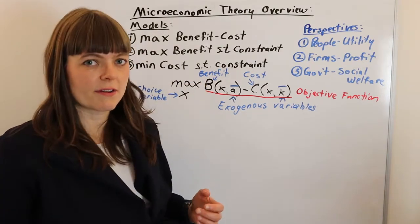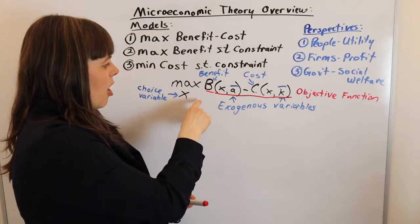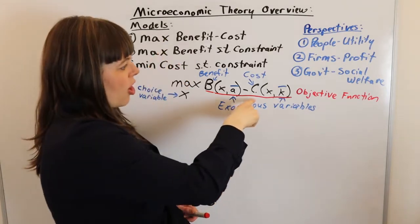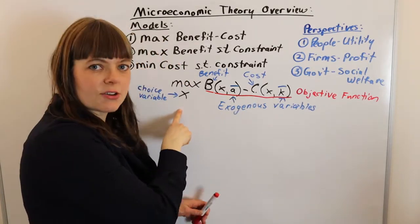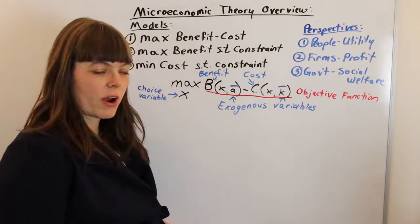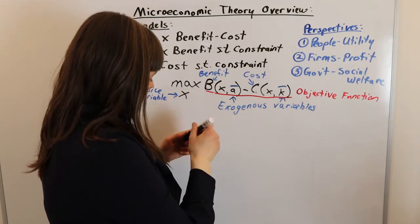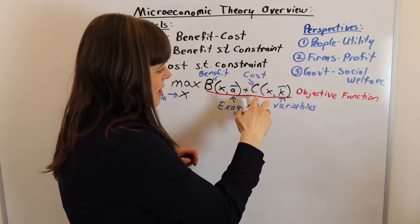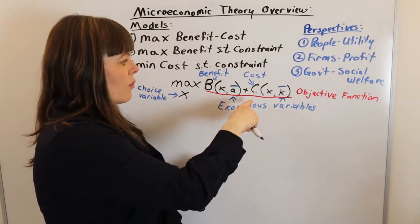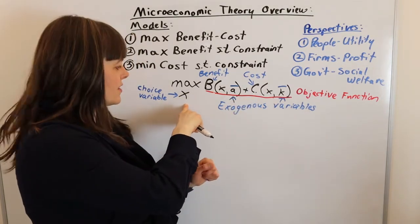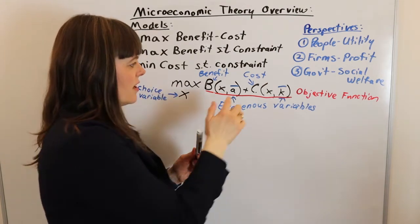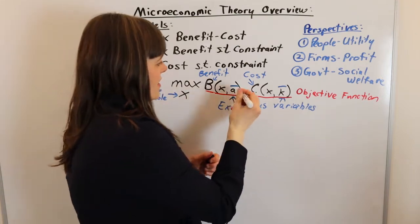Another way of thinking about benefits and costs: benefits are forces that will want you to increase your choice variable, and costs are forces that will want you to decrease your choice variable. We could have a situation where both benefit and cost are positive but there's a negative relationship between C and X, and that will lead to C still being a force that causes us to want to decrease the value of our choice variable. That's an overview of our classic economic model.